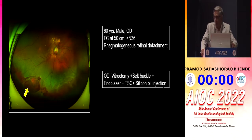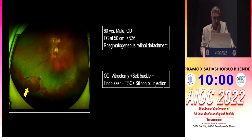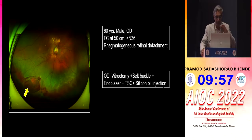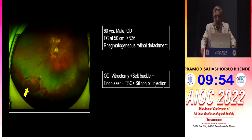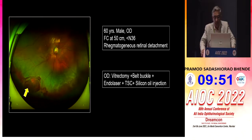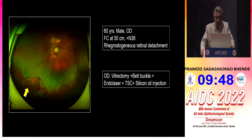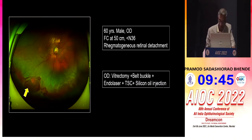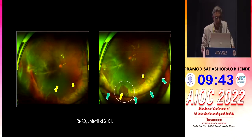Thank you for the invitation to be part of this course. We'll start with one single case: a 60-year-old male, right eye, had a vision of 50 centimeter finger counting and reported for detachment. He underwent vitrectomy, we added silicone oil, and the patient came back with a recurrence.